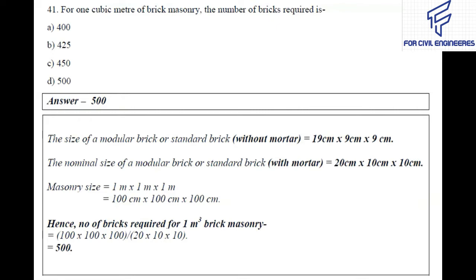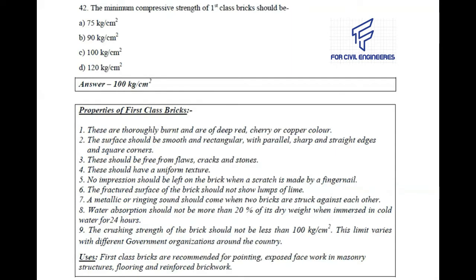The molds are therefore made longer by about 8 to 12 percent in all directions. Question number 41: For one cubic meter of brick masonry, the number of bricks required is — the right answer is 500. If you divide the masonry size by the nominal size of modular brick, the number of required bricks comes to 500.